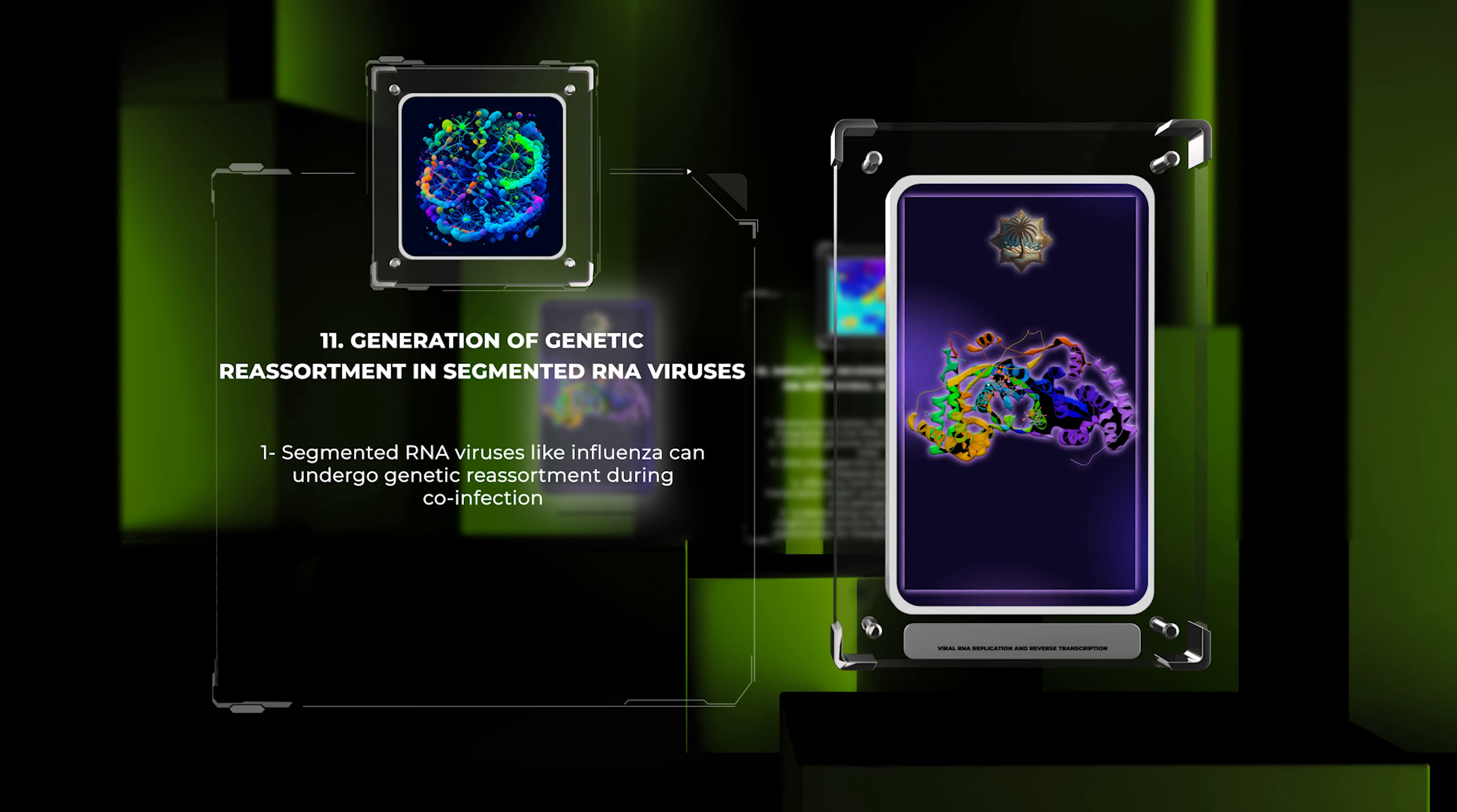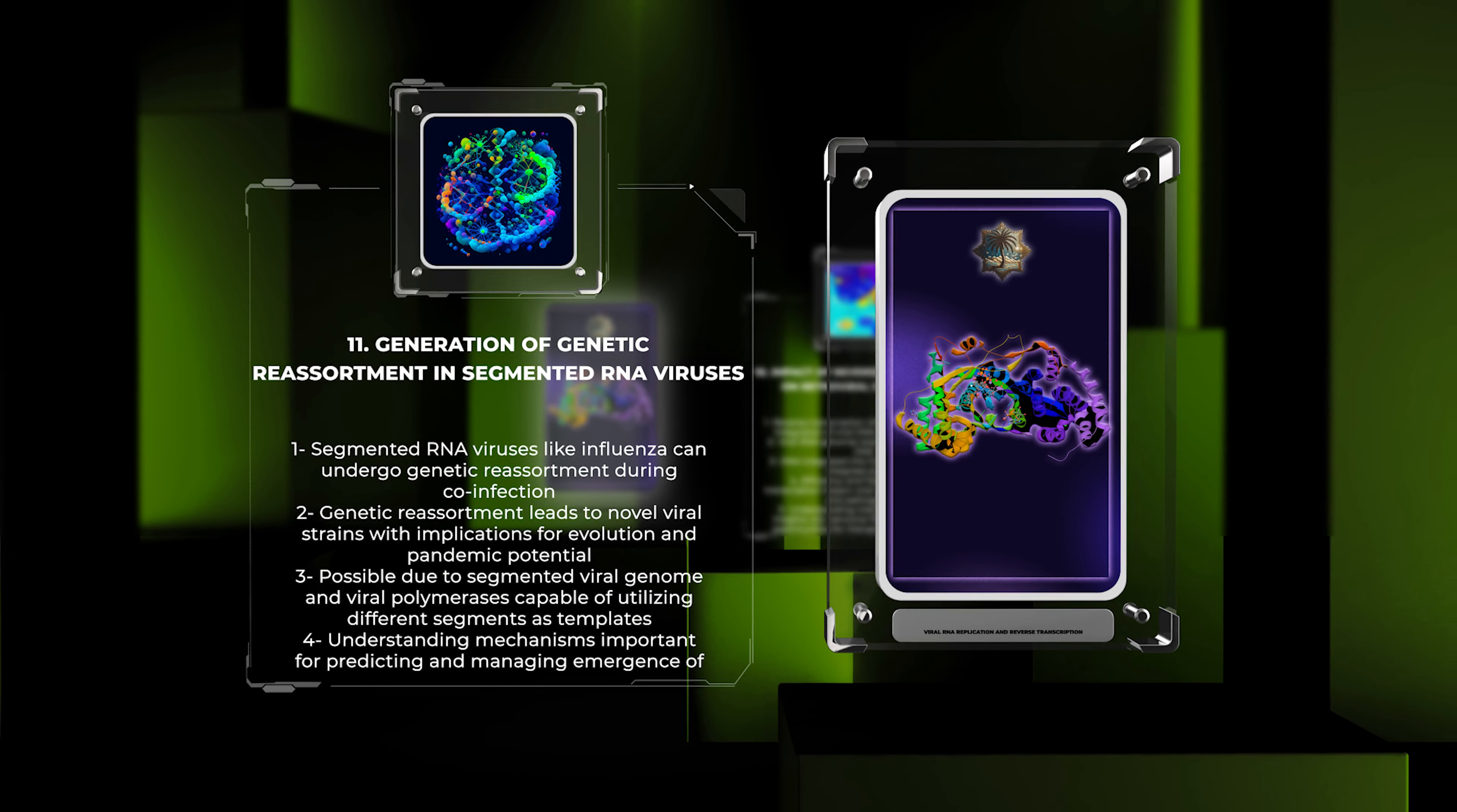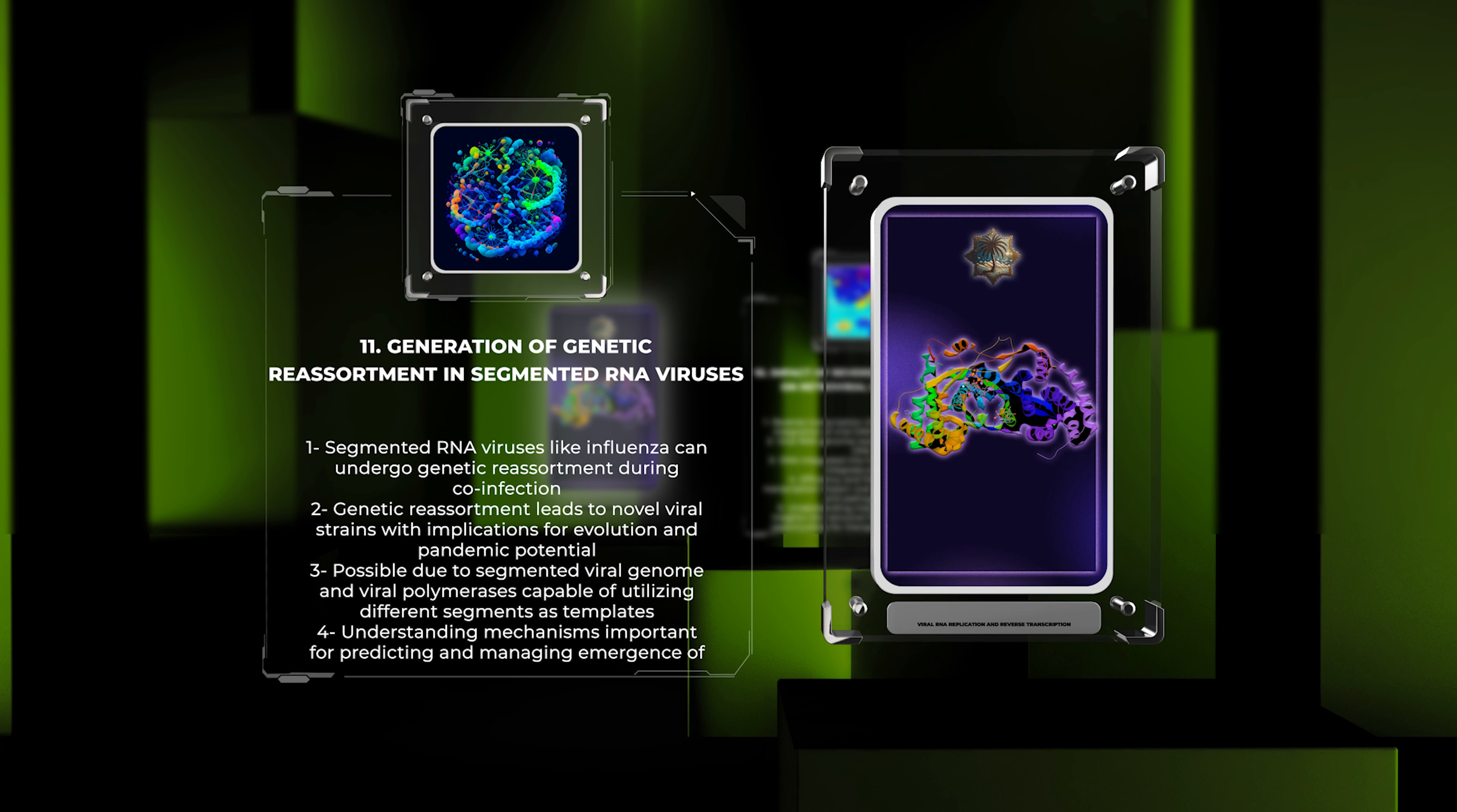Segmented RNA viruses, such as influenza viruses, possess multiple RNA genome segments that can undergo genetic reassortment during co-infection. This process leads to the generation of novel viral strains with profound implications for viral evolution, pathogenicity, and pandemic potential.